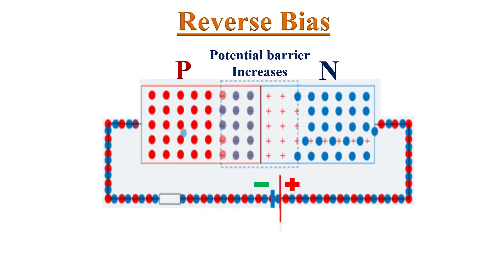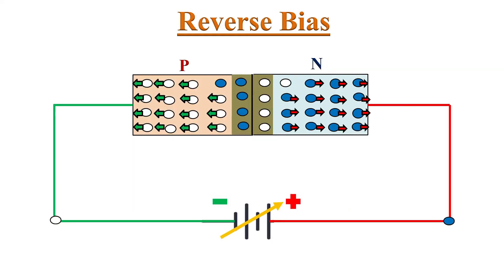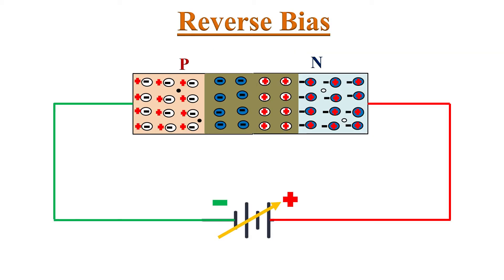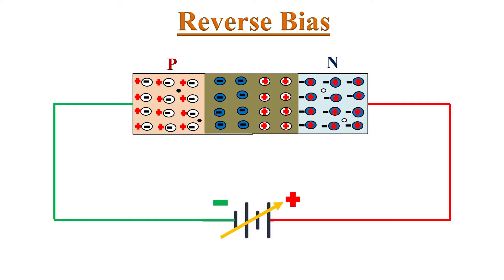In reverse biased condition, a very small amount of leakage current flows through the PN junction due to minority charge carriers. As we increase the applied reverse voltage, the width of the depletion region also increases. Due to this, the immobile ions in the depletion region increase, resulting in a strong electric field in the depletion region. Due to this strong electric field, the minority charge carriers get accelerated and move faster through the depletion region.